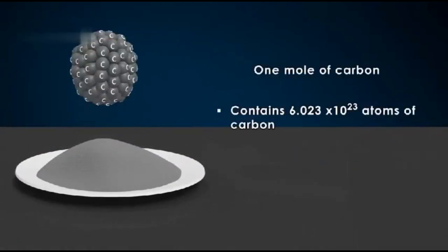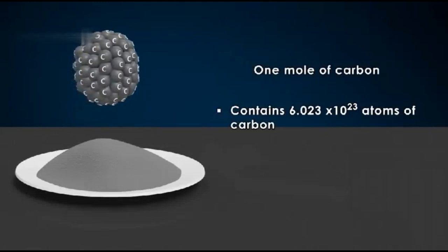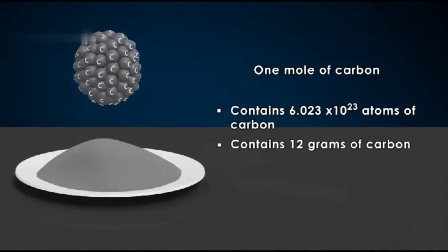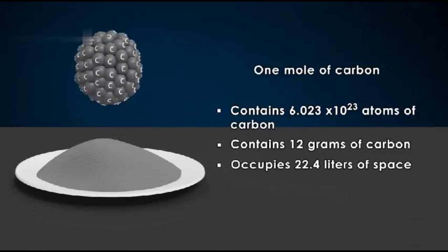Using carbon as our example, let's do a quick recap of the three principles of mole. One mole of carbon contains 6.023 × 10²³ atoms of carbon. One mole of carbon contains 12 grams of carbon. One mole of carbon occupies 22.4 liters of space at standard temperature and pressure.